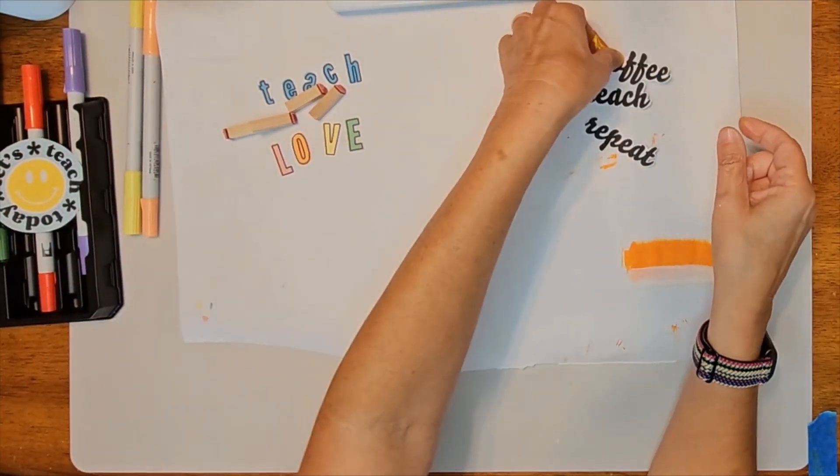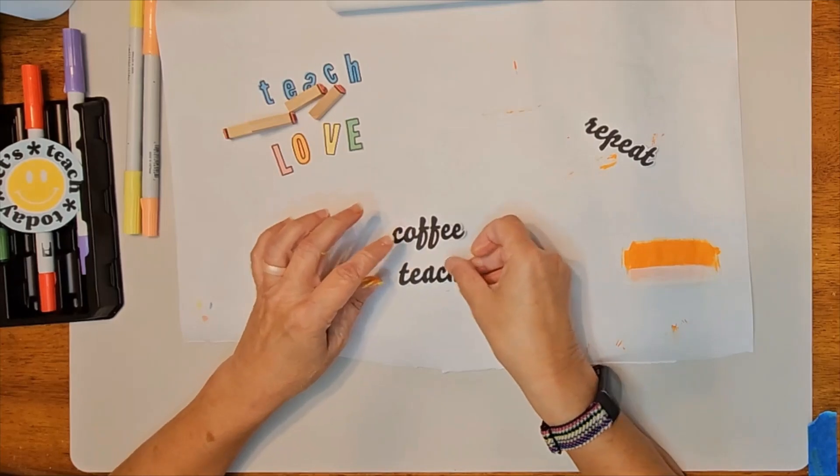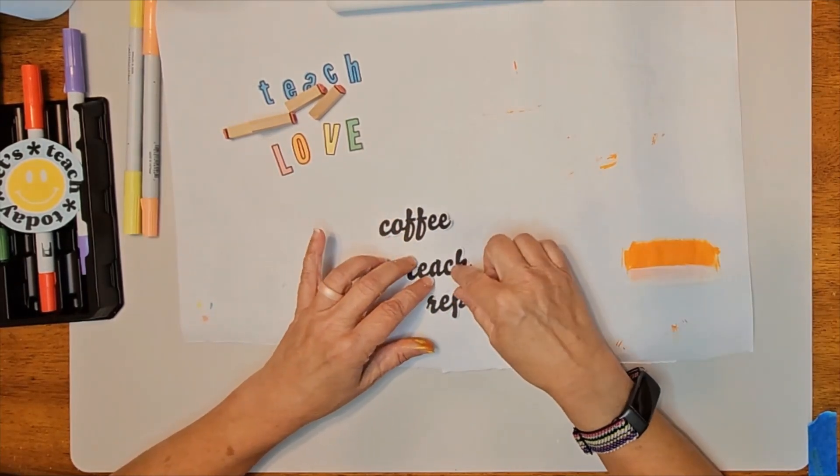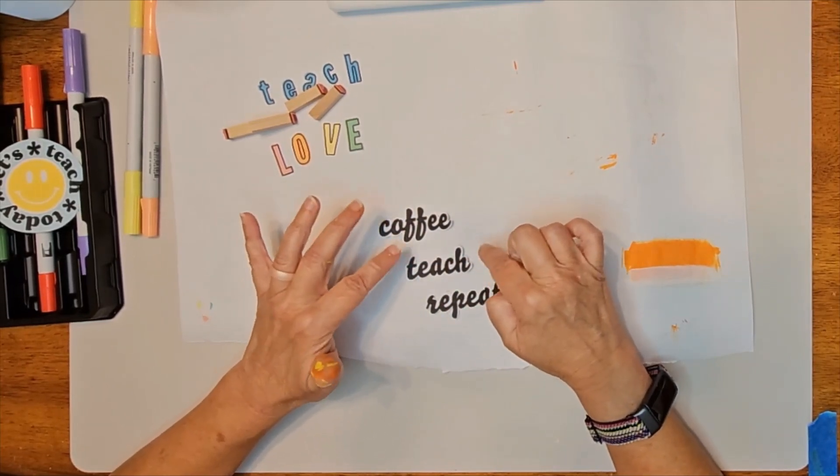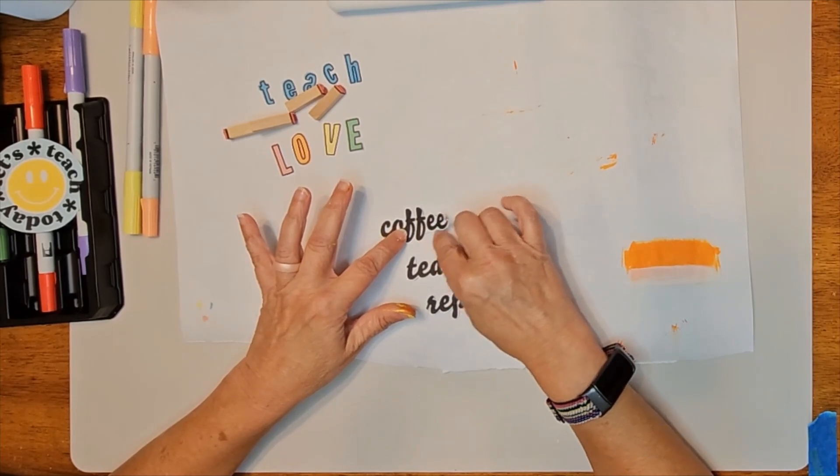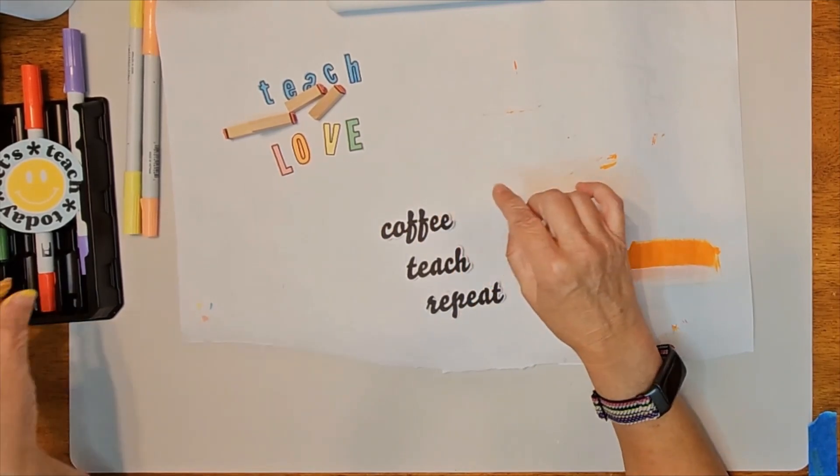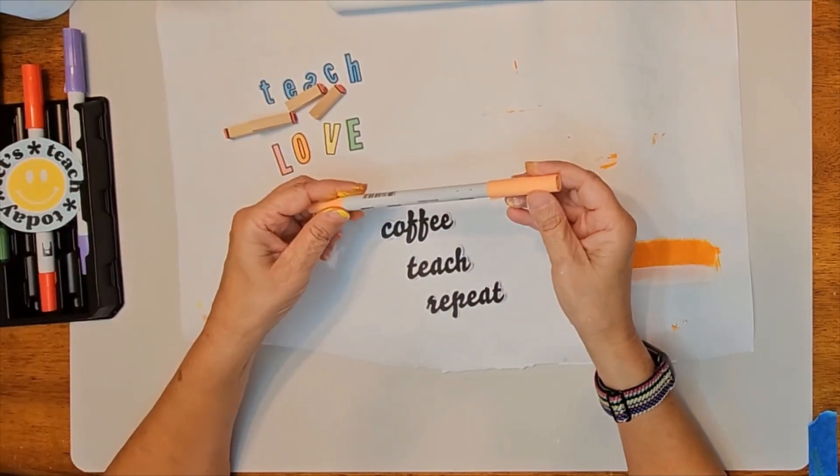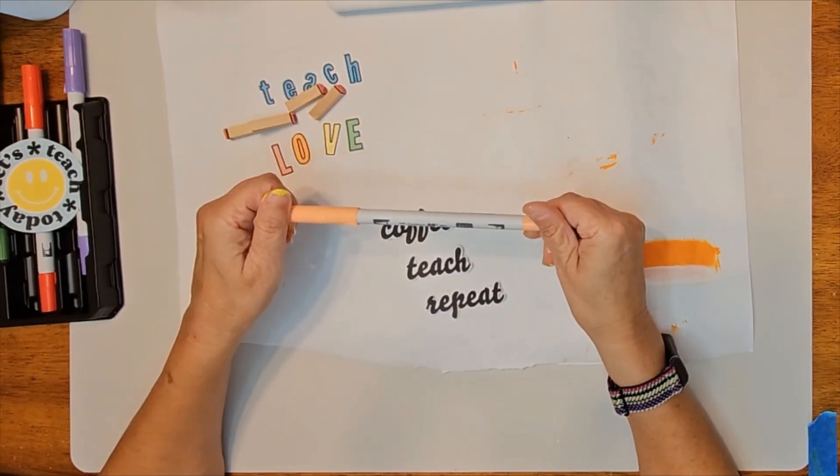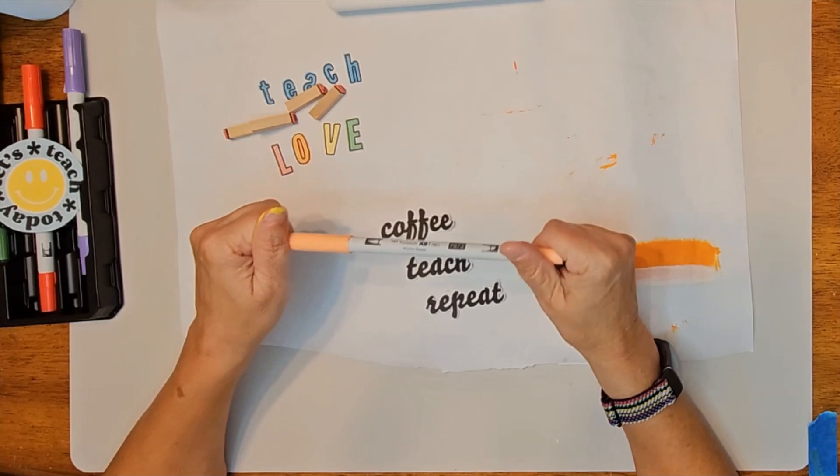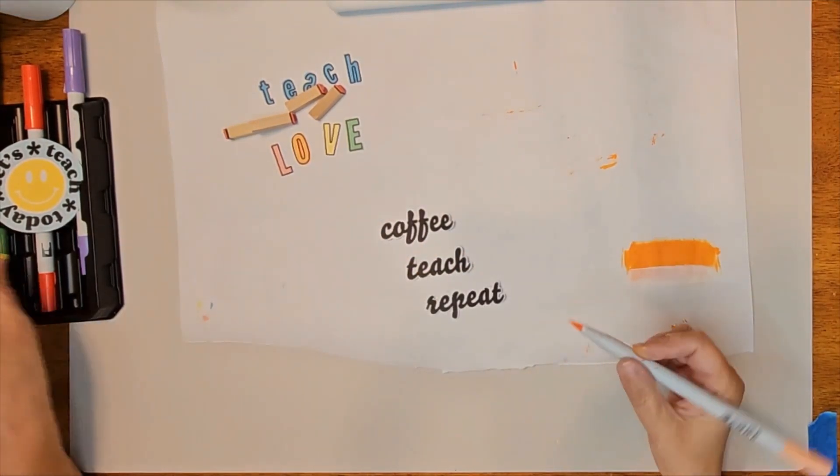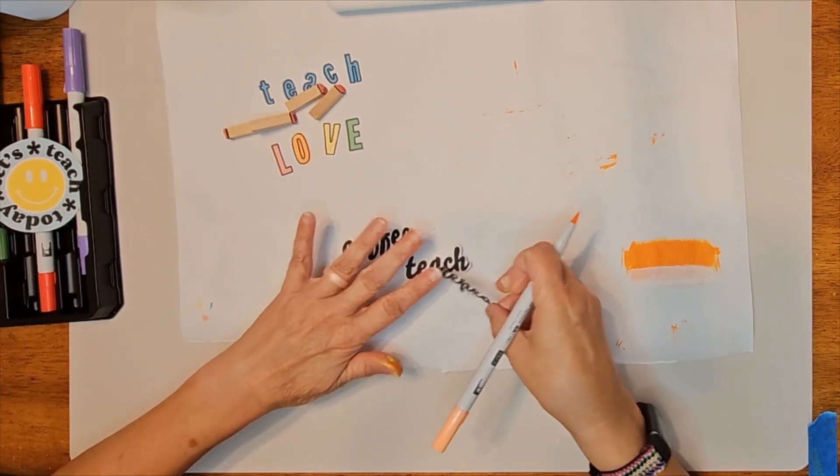And then the coffee, teach, and repeat. I can't hardly get every bit of that. So I decided to leave a little bit of white around each letter. And I will be using an orange Tombow alcohol-based ink just to go around each of these letters.